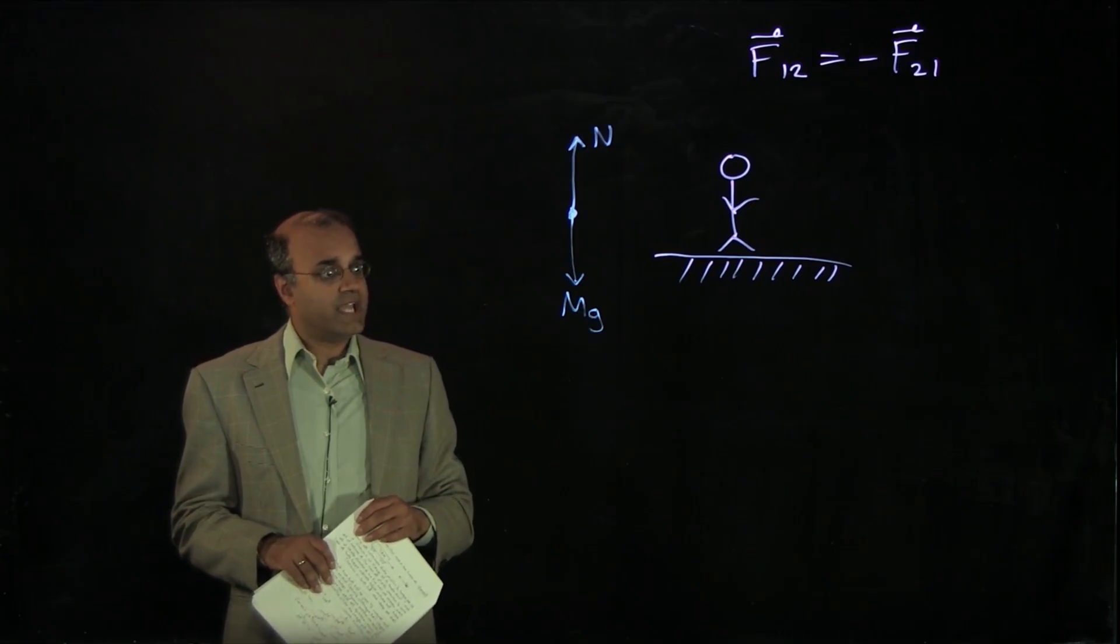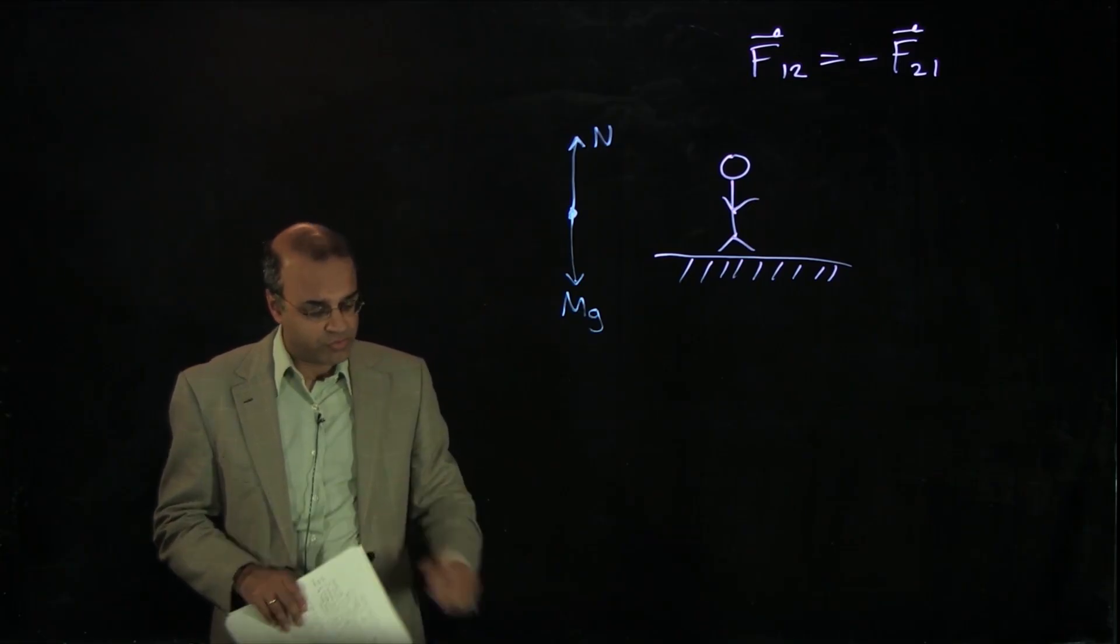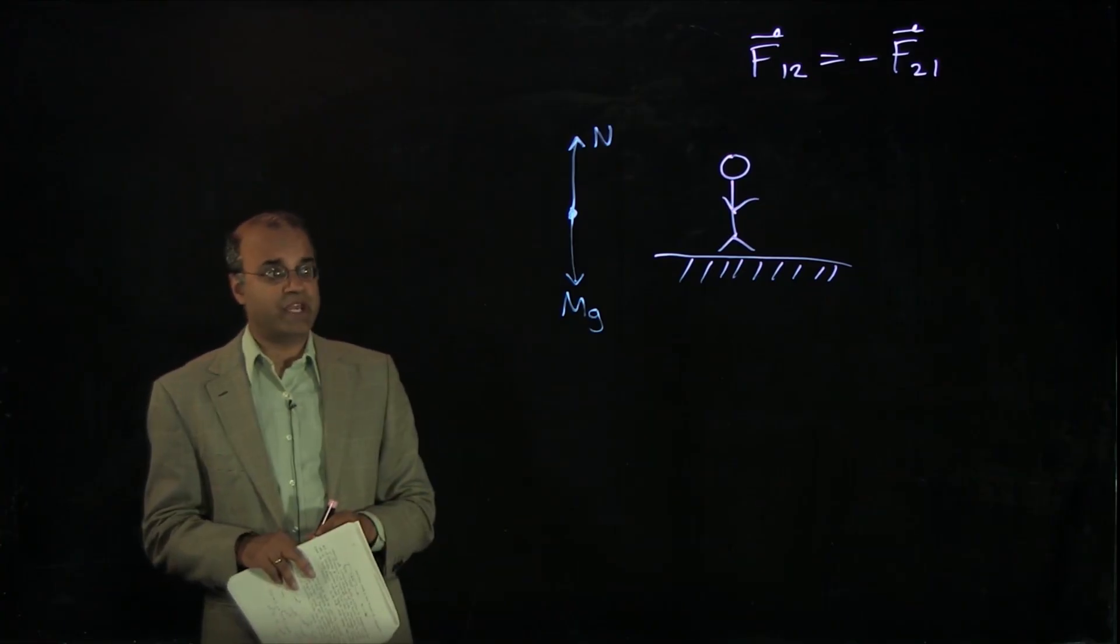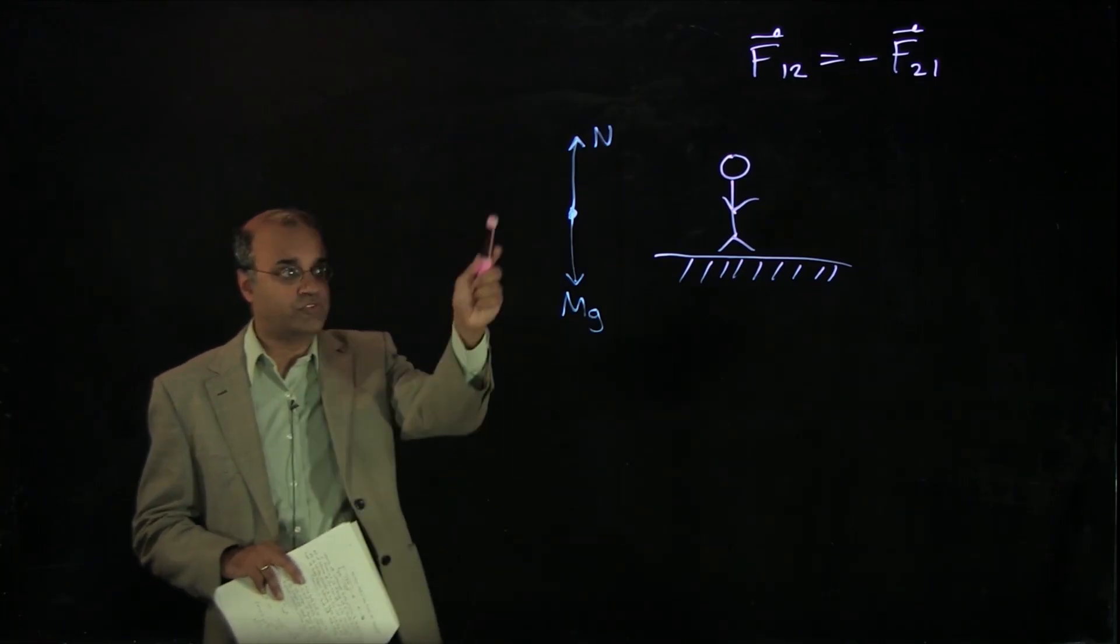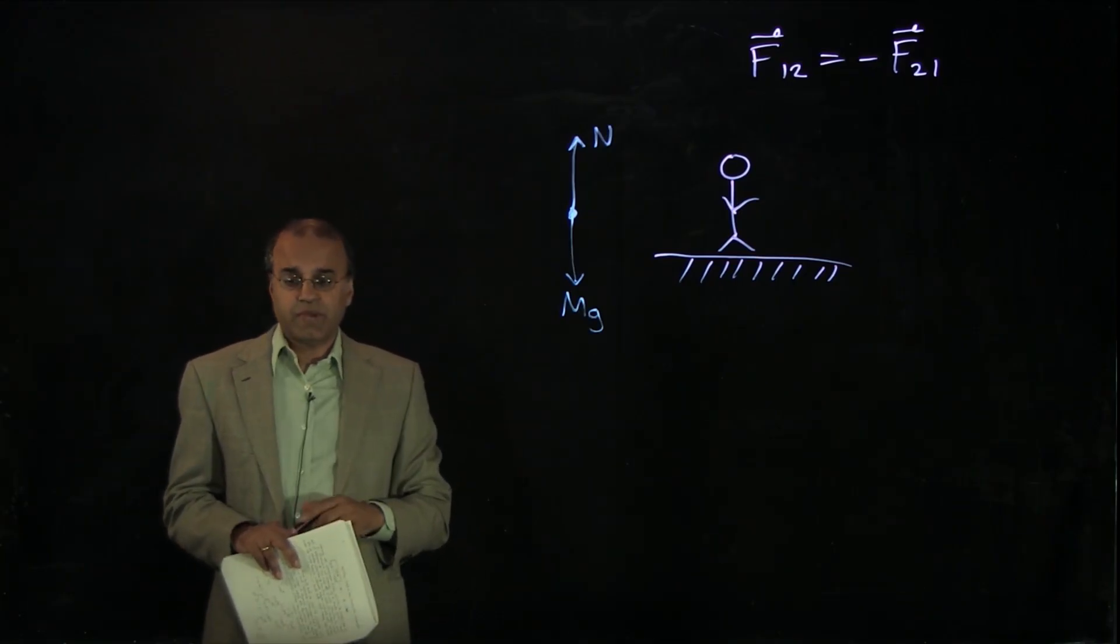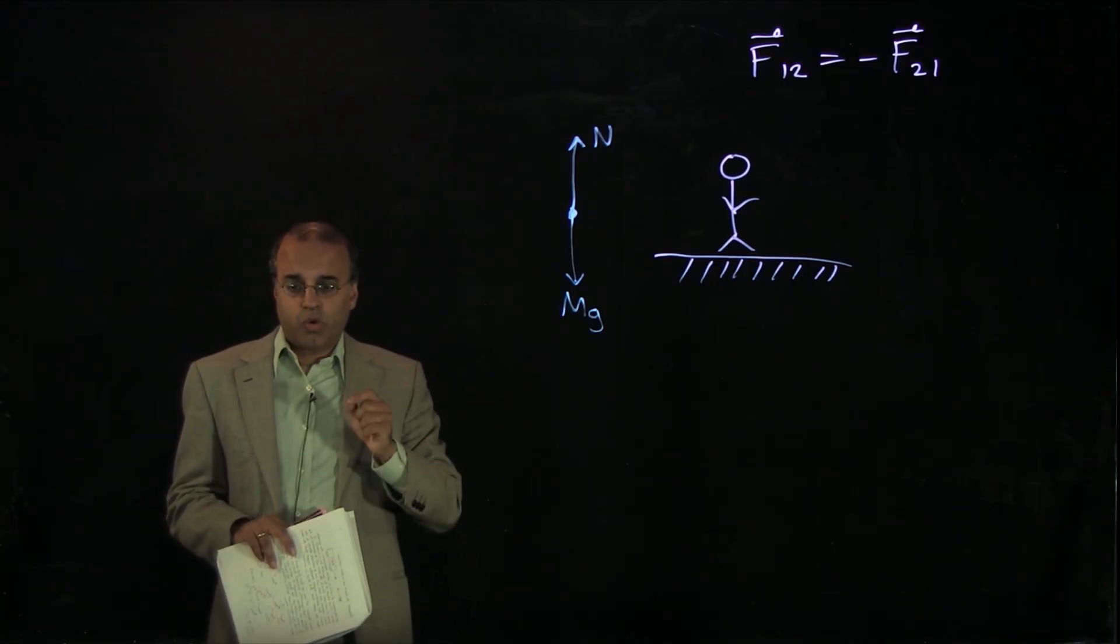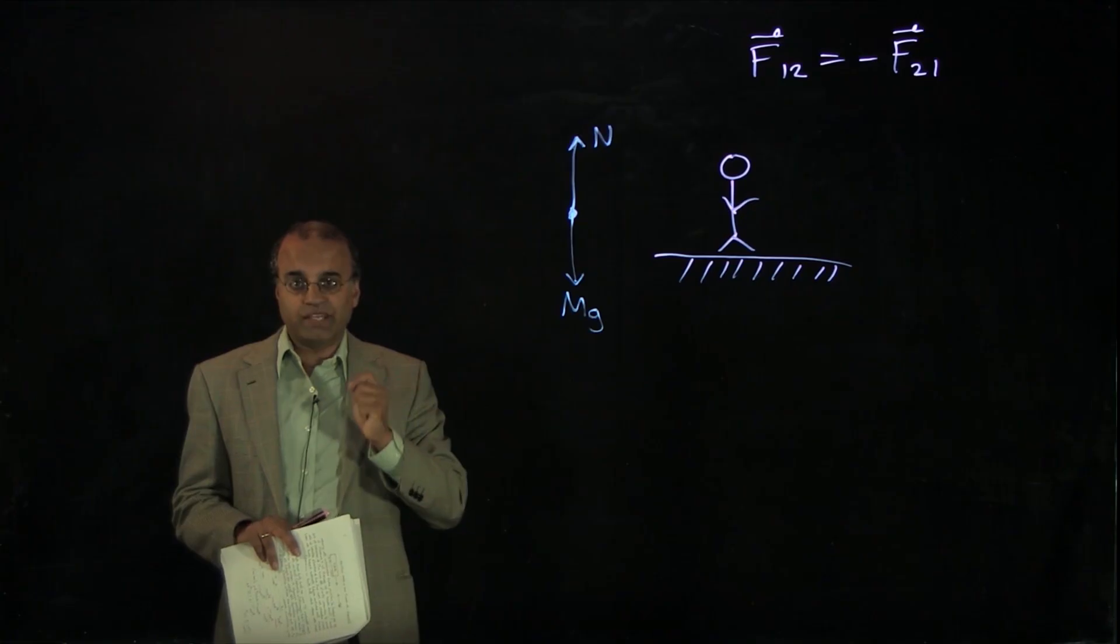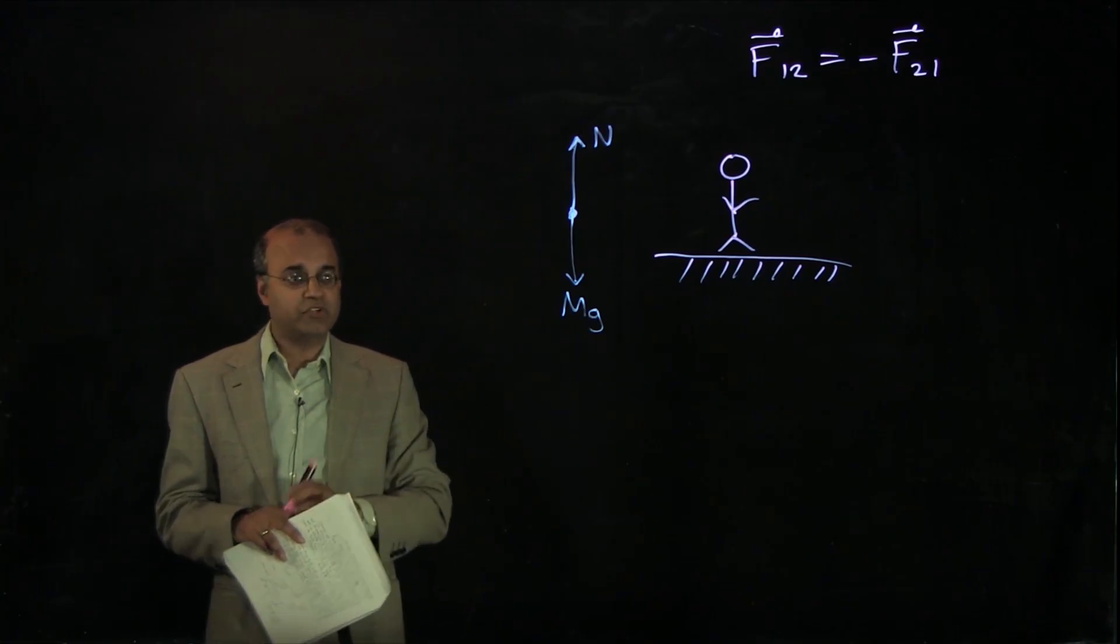Now, you might look at gravity and the normal force and wonder if those are an interaction pair. And they're not, because notice that these two forces are both acting on the same object, the person. The interaction pair always comes from realizing what is exerting the force on the object. So let's look at each of these in turn.